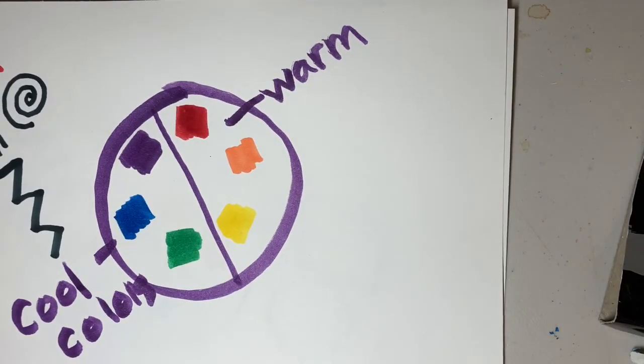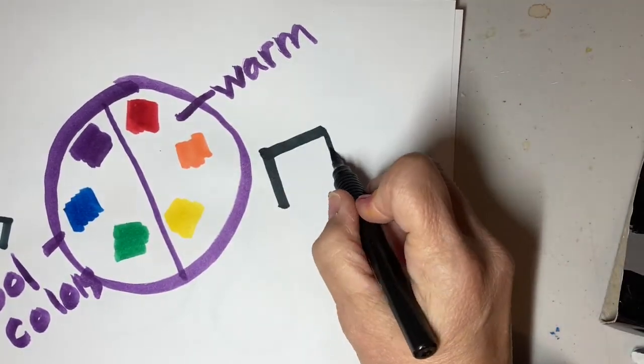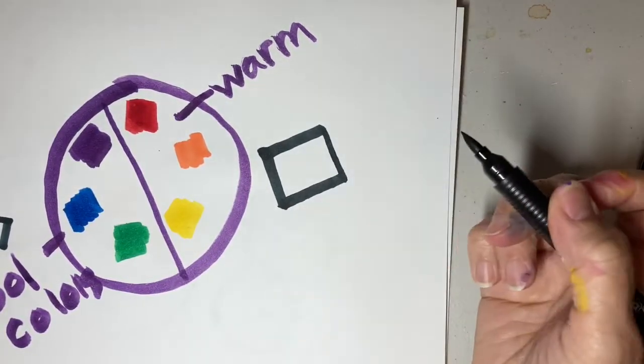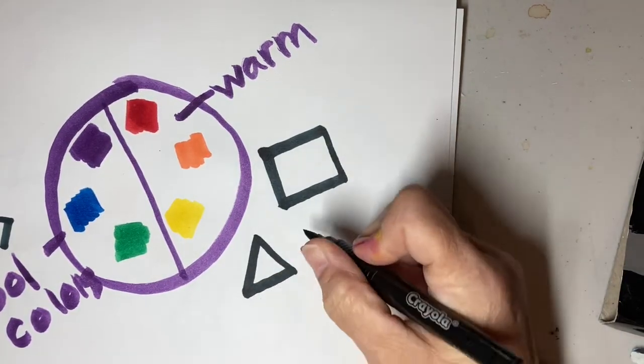And then we have shape. Shape is a line that is closed. It's not open. It's a line that touches itself.